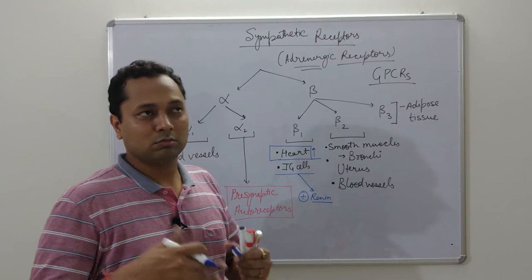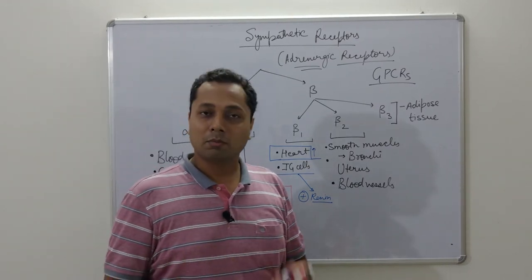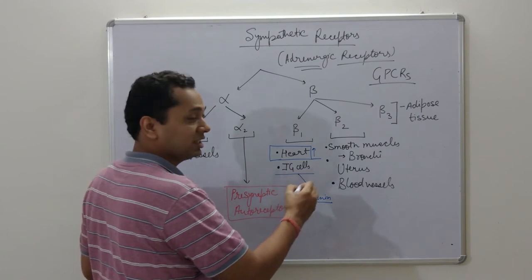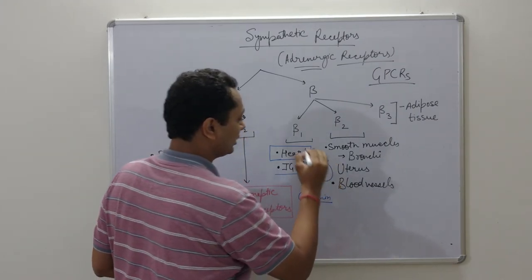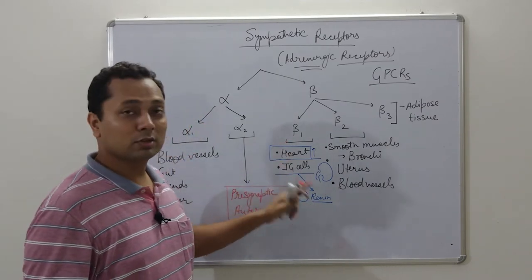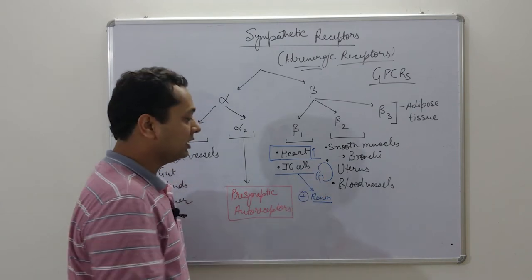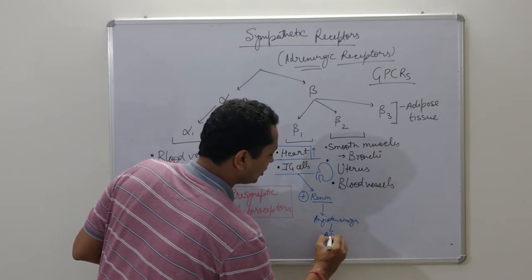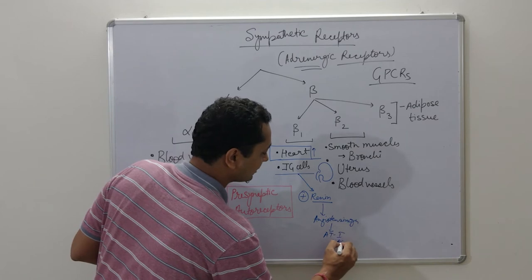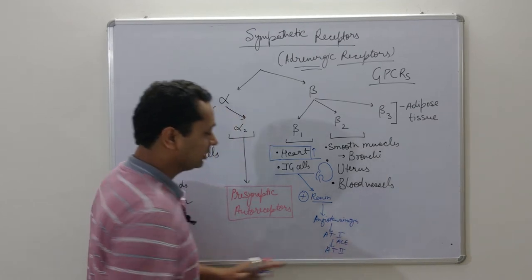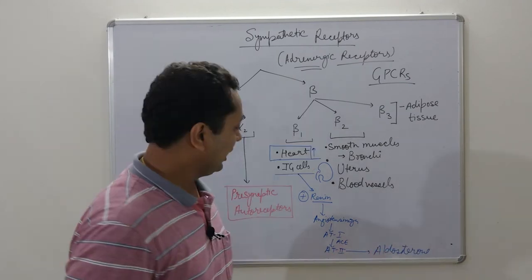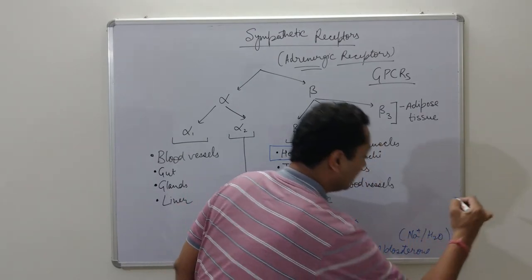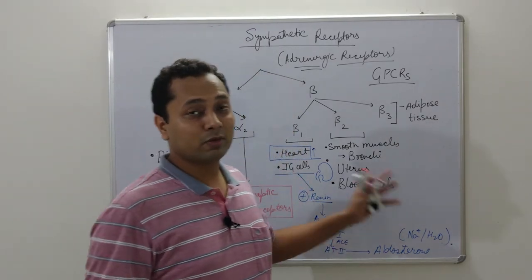In the JG cells, beta-1 stimulation promotes the release of renin. When the body is under stress and needs higher blood pressure, the JG cells in the kidney release renin under the influence of noradrenaline. Renin acts on angiotensinogen, converting it to angiotensin-1. ACE then converts angiotensin-1 to angiotensin-2, which triggers the release of aldosterone.